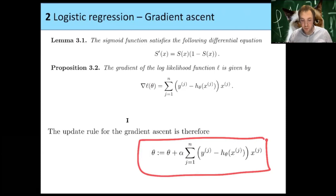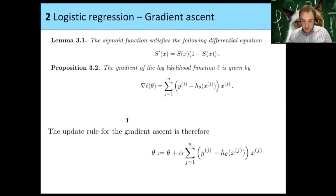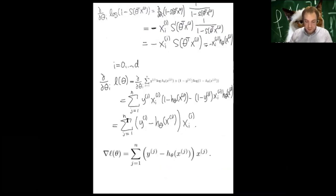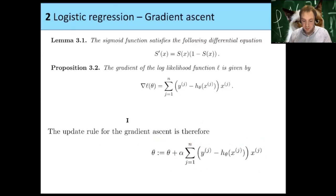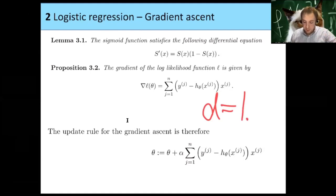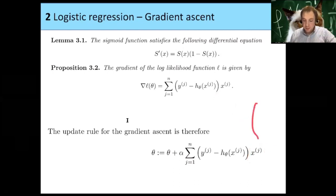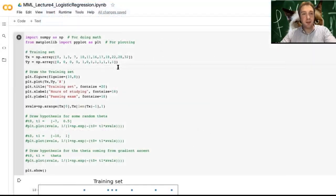Now let's switch to the programming part. In the notebook I will show how these formulas appear. We'll go back to the d equals 1 example, so the feature vector x_j has size 2: the first entry is always 1 (x_0), and the second entry is the number of hours studied.